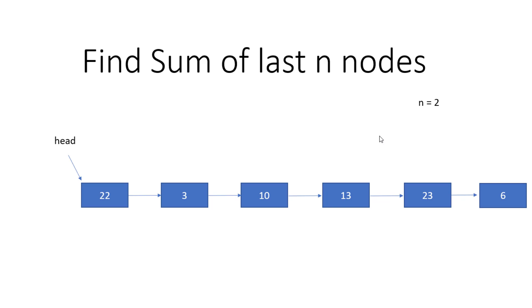So basically we will see how we can solve that. Our aim is to first of all reach a certain position. If our N is 2, if we reach there somehow, then we can easily find out what is the sum of the last N nodes. Once we reach there, we can iterate the remaining nodes in the linked list and calculate the sum — like 23 plus 6 in this case when N equals 2.